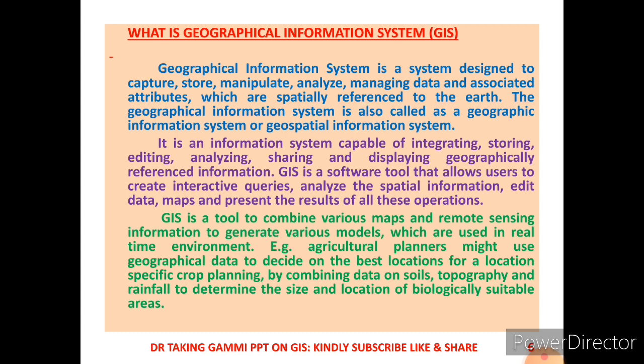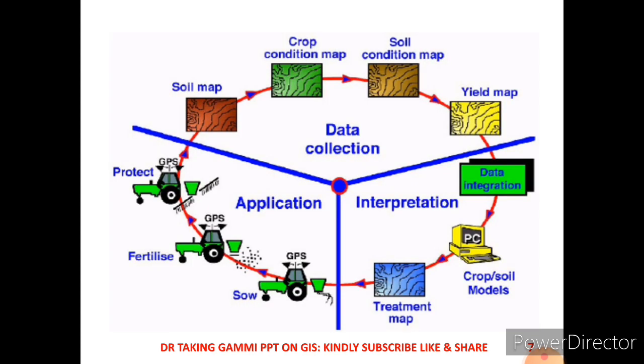GIS is a tool to combine various maps and remote sensing information to generate various models used in real-time environments. For example, an agricultural planner might use geographical data to decide on the best location for location-specific crop planning by combining data on soils, topography, and rainfall to determine the size and location of biologically suitable areas, as well as to model the spread of disease.